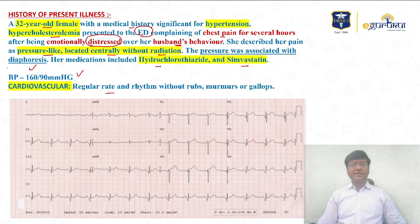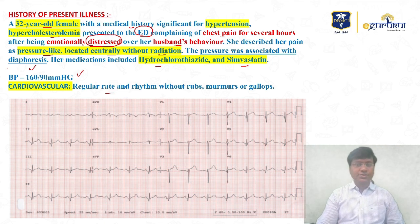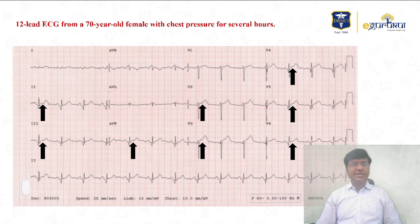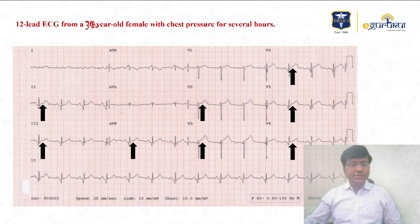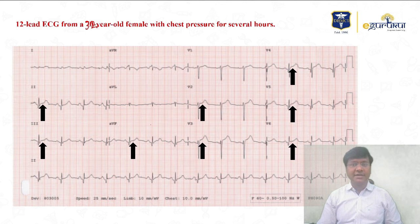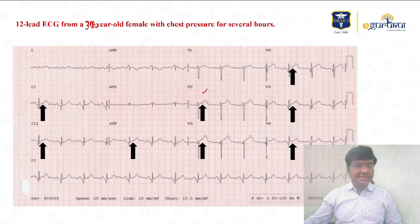This is the ECG of the patient. Now, what will you do with this particular patient given this ECG? She is a 32-year-old female. If you observe the ECG, the abnormalities you can make out are: from V2 to V6, there is ST segment elevation, and there is also slight ST segment elevation in leads II, III, and aVF.